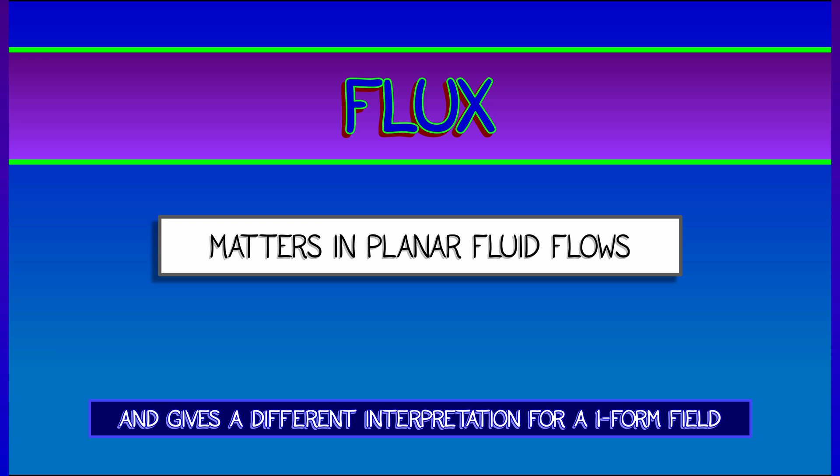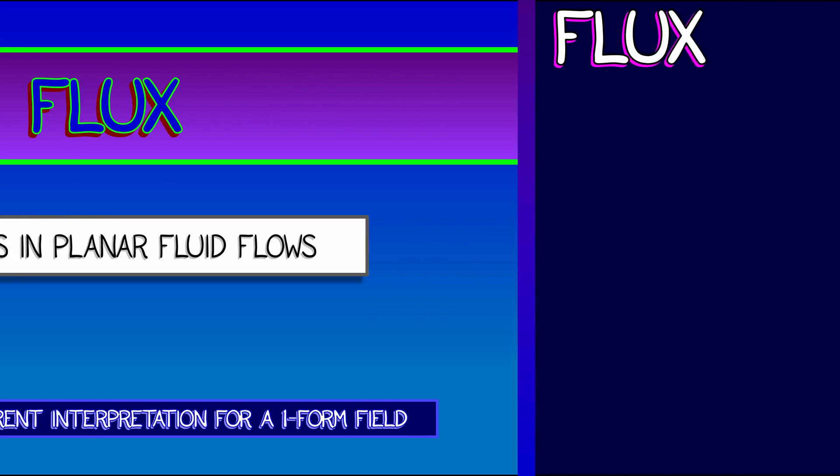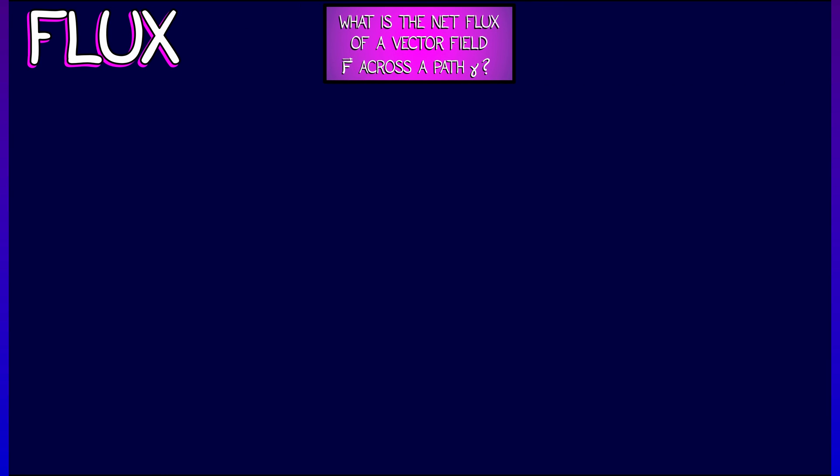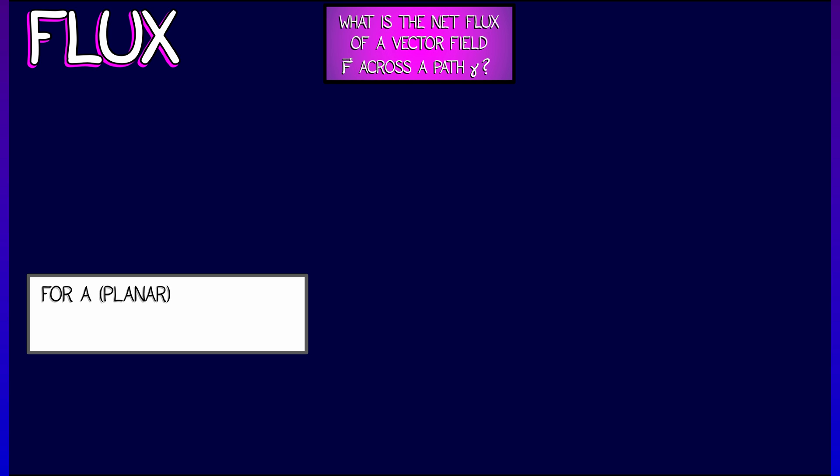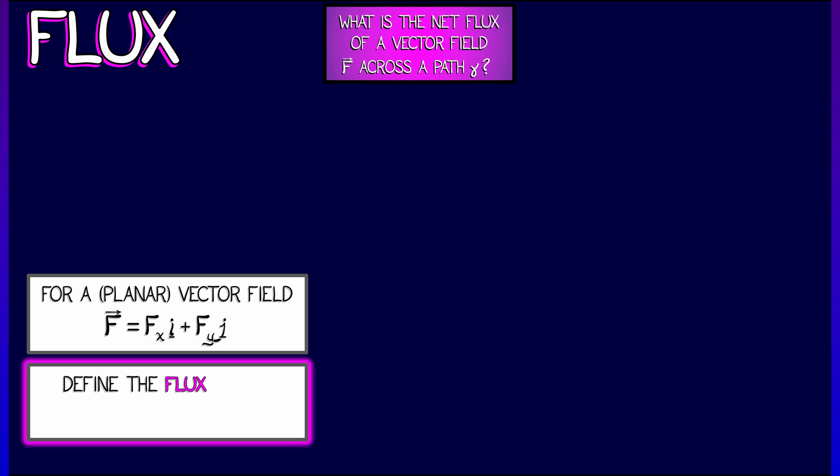Let's consider what happens when we have some vector field f and we're looking at a path gamma, and we want to know how much stuff f pushes across that path. As usual, our vector field is given by f_x i plus f_y j.